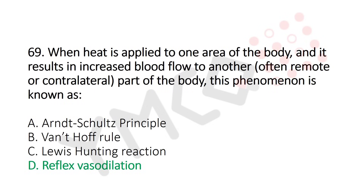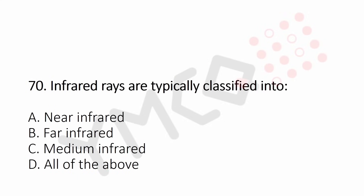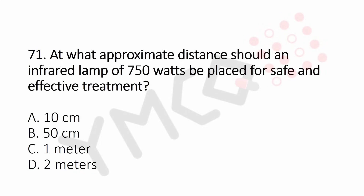Now let's move to question number 70. Infrared rays are typically classified as: Option A, near infrared. Option B, far infrared. Option C, medium infrared. Option D, all of the above. And the answer is Option D, all of the above.